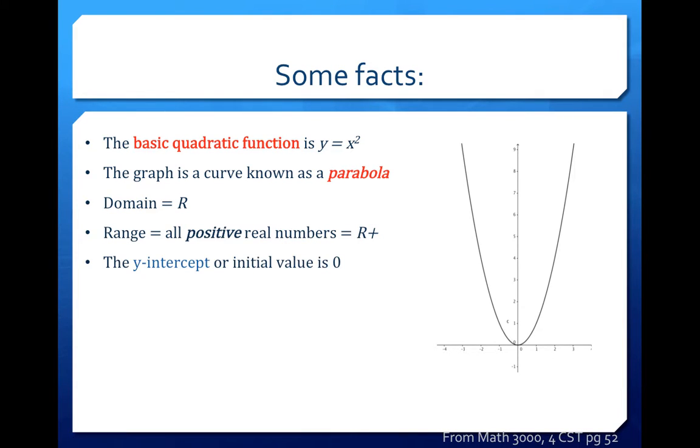The y-intercept or initial value of this function, so where it crosses the y-axis, if you notice here, is simply 0. The function also crosses the x-axis only at one small point here, which is also 0.